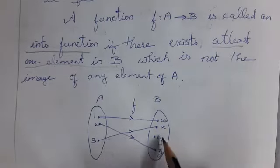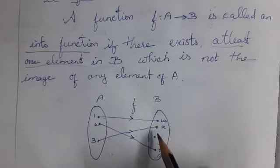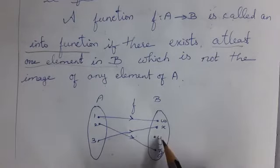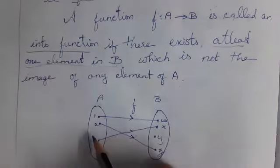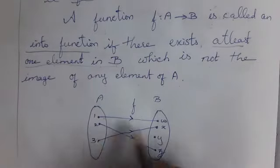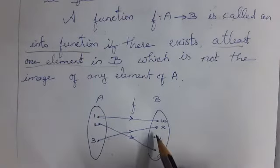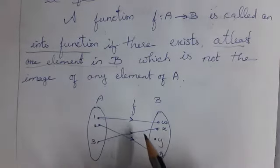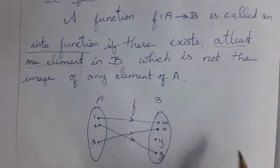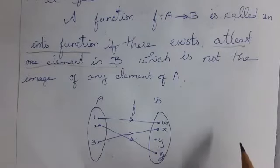Once again, if at least one element in B is not an image of any element of A, then immediately you can say this is an into function.